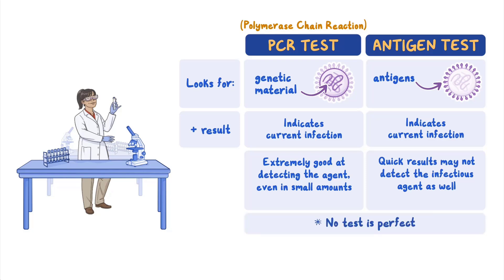Because no tests are perfect and may produce a false result, sometimes both tests are done — the antigen test with rapid results, followed by a PCR test to confirm.